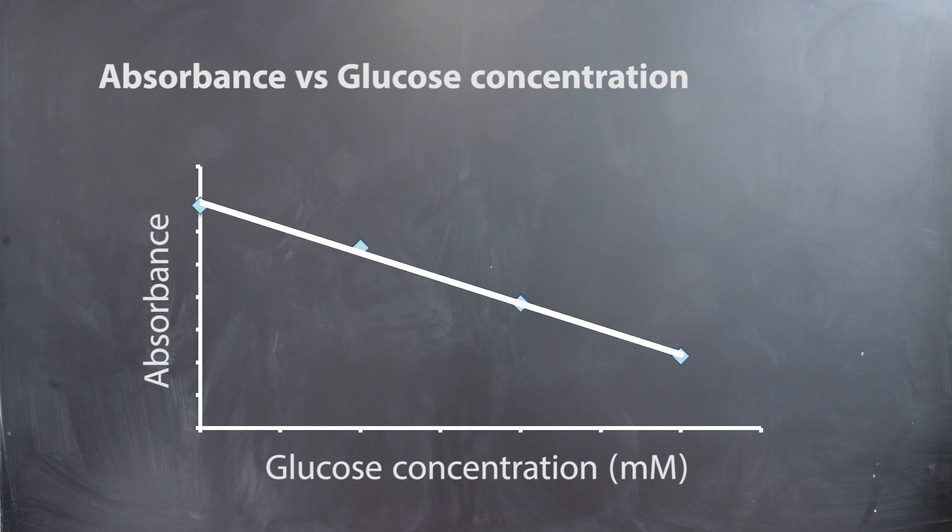If you obtained percent transmittance values from the spectrophotometer, you can convert them to absorbance using the formula A equals negative log of T, where T is a decimal, not a percentage.